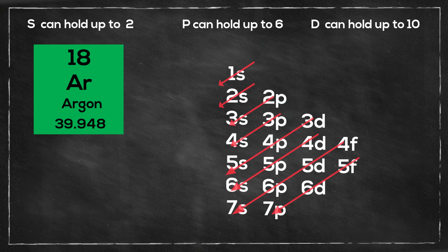Argon has an atomic number of 18, so it will have 18 electrons. I will start at the 1s, so that will be 1s2. Then move to the 2s, that will be 2s2. Then 2p6. Then move to the 3s, so that will be 3s2.